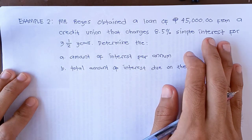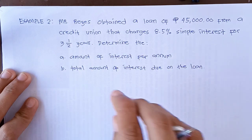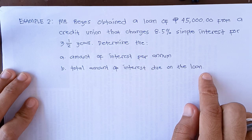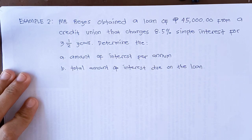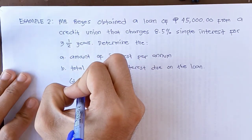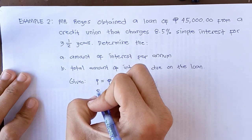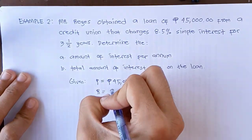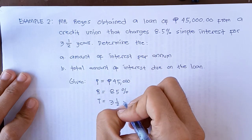We have here example number 2. Mr. Reyes obtained a loan of 45,000 pesos from a credit union that charges 8.5% simple interest for 3.5 years. Determine A, the amount of interest per annum, and letter B, total amount of interest due on the loan. First, let's find the given. So the given is our principal = 45,000, our rate = 8.5%, and our time = 3.5 years.